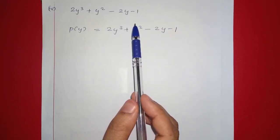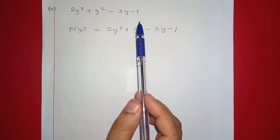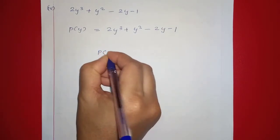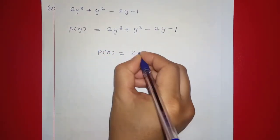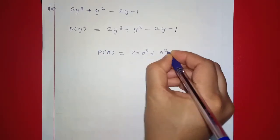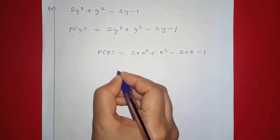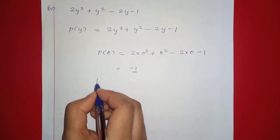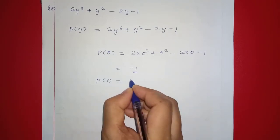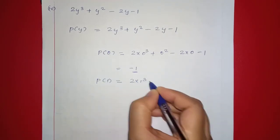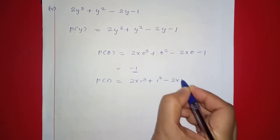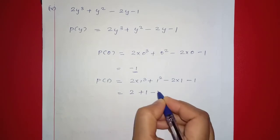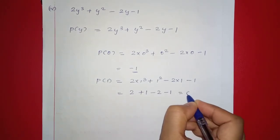The last polynomial: 2y raised to 3 plus y squared minus 2y minus 1. Testing y equals 1: 2 plus 1 minus 2 minus 1 equals 0. So P of 1 equals 0, meaning y minus 1 is a factor.